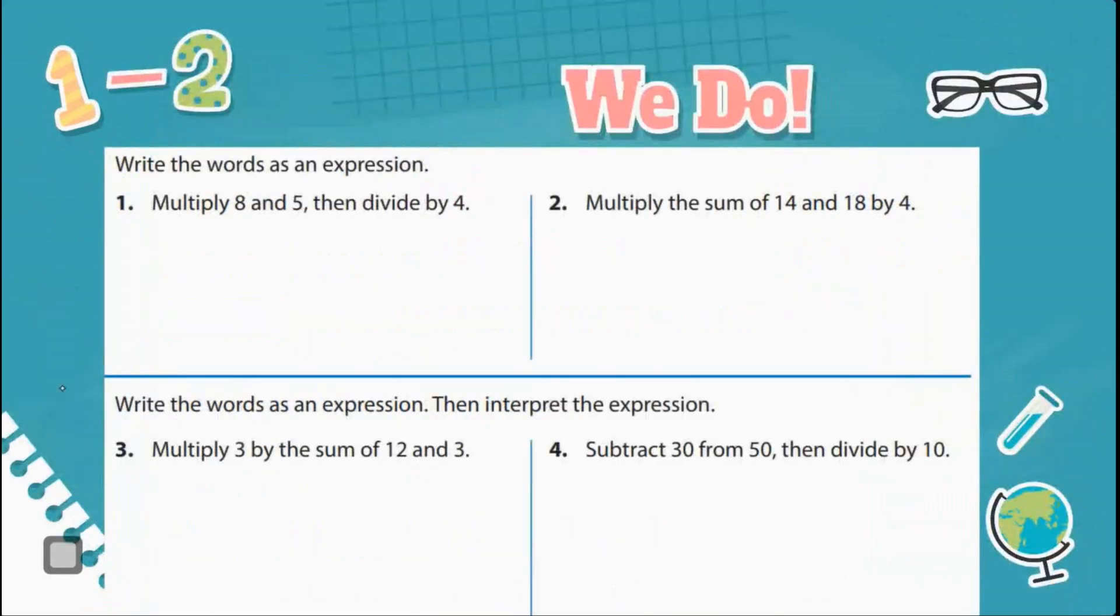I want you to write the words as an expression. Multiply 8 and 5 then divide by 4. So let's do exactly what it tells us to do. It says multiply 8 and 5. So it's telling us to do this first. Because then it says to do that. So 8 times 5, I do that first. So I put parentheses around it. Then I'm going to divide by 4.